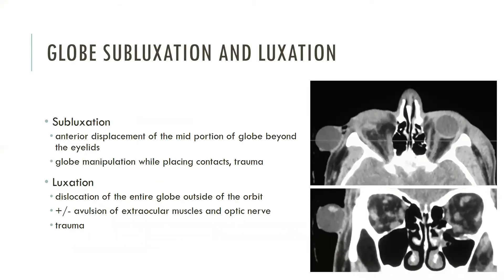Globe subluxation is rare and luxation is exceedingly rare. Globe subluxation is the anterior displacement of the mid portion of the globe beyond the eyelid aperture, while globe luxation is the dislocation of the entire globe outside of the orbit with or without avulsion of the extraocular muscle and optic nerve attachments. These injuries typically result from orbital fractures with large retrobulbar hematoma. Imaging may be used to assess the integrity of optic nerve and extraocular muscle attachments as well as evaluate for additional orbital traumatic injuries. These images demonstrate a patient with right globe luxation and disruption of optic nerve and extraocular muscle attachments.